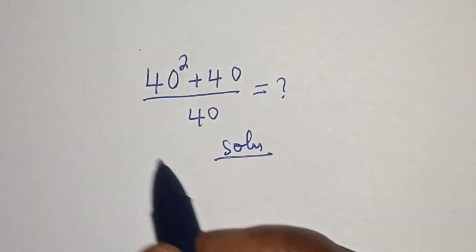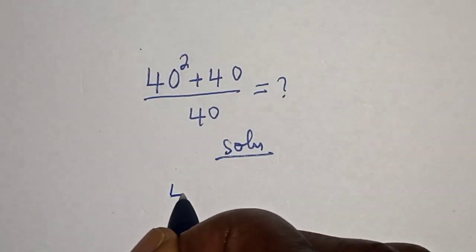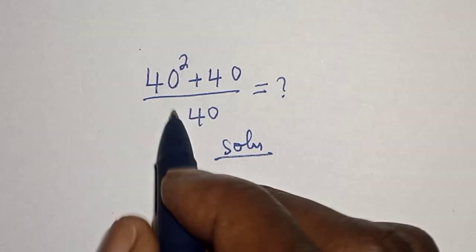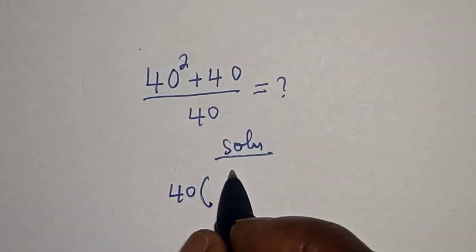40 squared plus 40, 40 is common, let's bring it out. We have 40 bracket, 40 squared divided by 40, that is 40 plus 40 divided by 40, over 40.